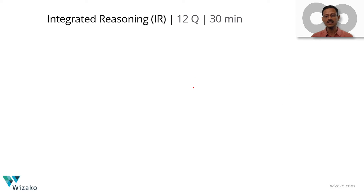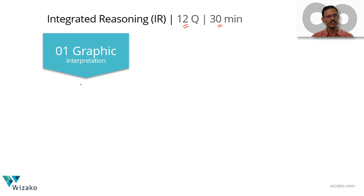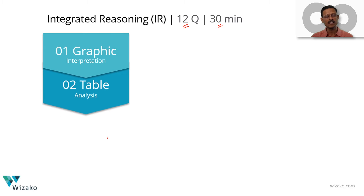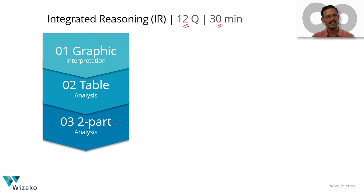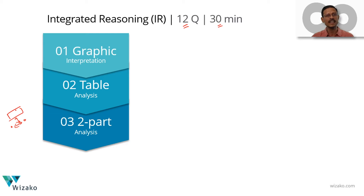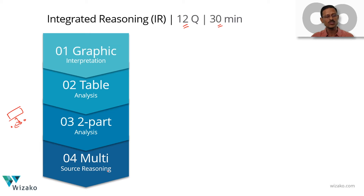Let's move to the Integrated Reasoning section — 12 multiple choice questions in 30 minutes. Questions are presented in four formats. First, graphic interpretation: a pictorial representation of data followed by a question. Second, table analysis: tabular data with a question. Third, two-part analysis: a question stem with two linked parts — you must get both parts right to earn credit; getting one right and the other wrong earns no credit. Fourth, multi-source reasoning: more than one source of data with questions that follow.